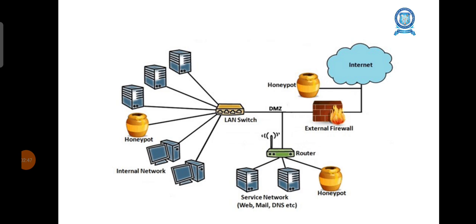Attackers use the honeypot system to enter and carry out their attack activities. The aim of the honeypot is to catch the attacker, identify their activities and techniques, and provide corresponding security mechanisms. One honeypot is installed externally after the external firewall, another honeypot is installed in the local area network, and another one is installed after the router. In every necessary spot, honeypots are used to filter attackers.